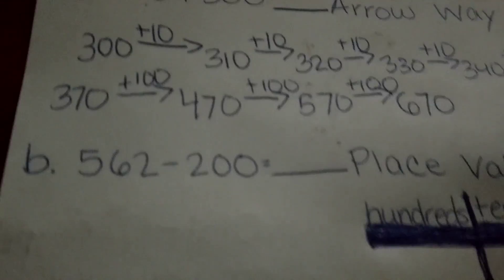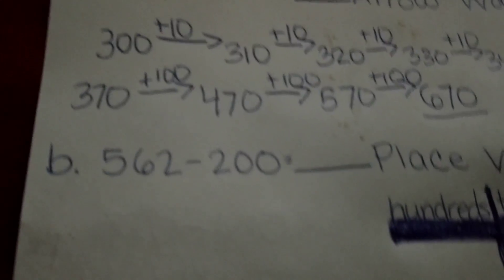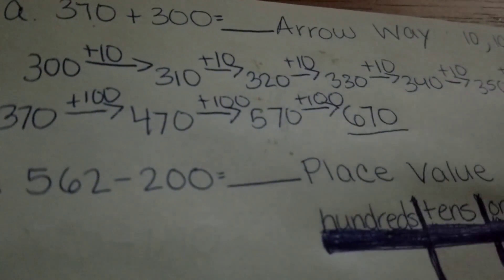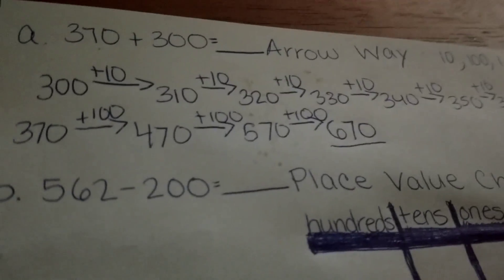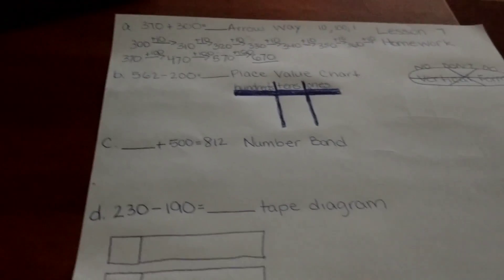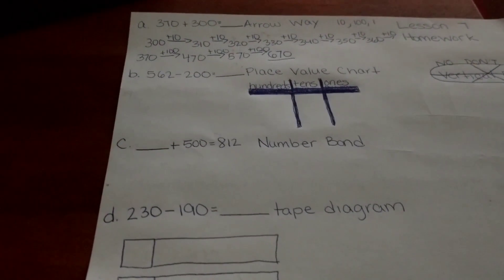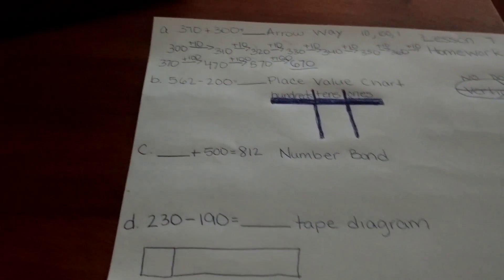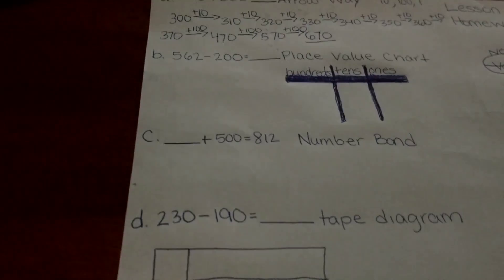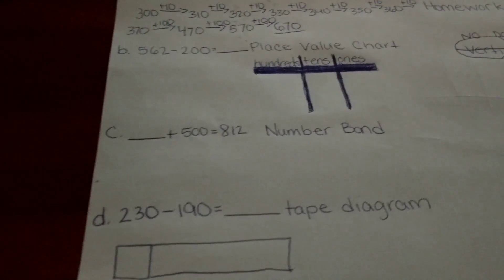Now some students may find this to be really easy and helpful to add it piece by piece. Others may find it's too long, so they're going to choose one of the other three methods. The best part about the homework right now is that they can actually solve whichever way is easiest for them. So if they decide to use all tape diagrams, all number bonds, a couple of each, a couple of arrow ways, a place value chart here and there, all of that is fine.